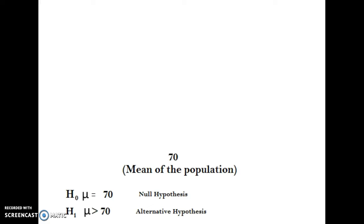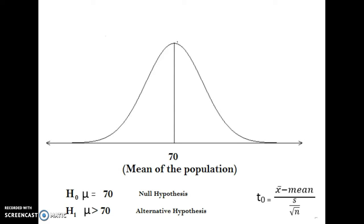In this video, I'm going to introduce hypothesis testing and then do a few examples showing how to use StatCrunch and Excel to perform hypothesis tests. For a brief intro to hypothesis testing of a population mean, I'm going to talk about the height of American men. We assume the mean of that population of American men is about 5 foot 10 inches, or 70 inches.